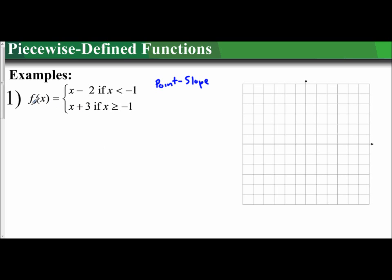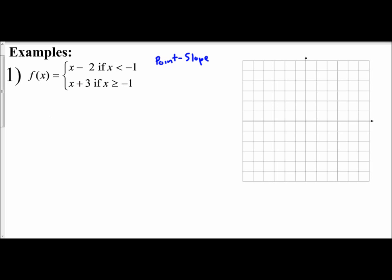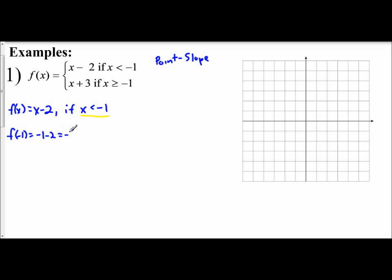So let's do the first one. We have f(x) equals x minus 2 if x is less than negative 1, or f(x) equals x plus 3 if x is greater than or equal to negative 1. We're going to graph first the function f(x) equals x minus 2, and this is if x is less than negative 1. That boundary is what we need to be careful of, and it allows us to see our starting point. We take negative 1 and plug it into our function: f(negative 1) equals negative 1 minus 2, which is negative 3.